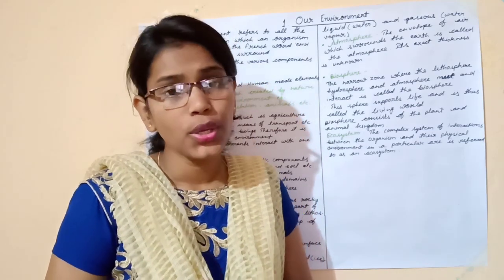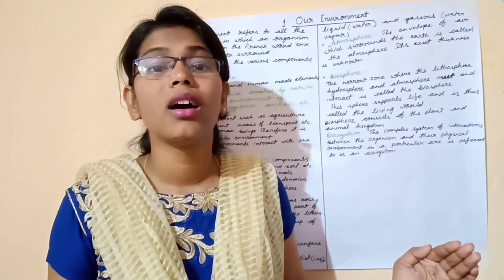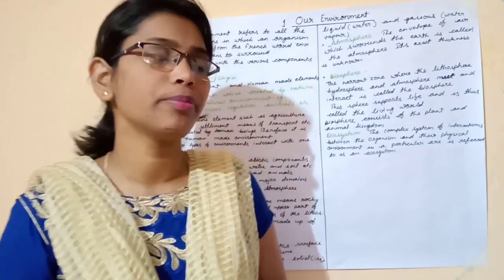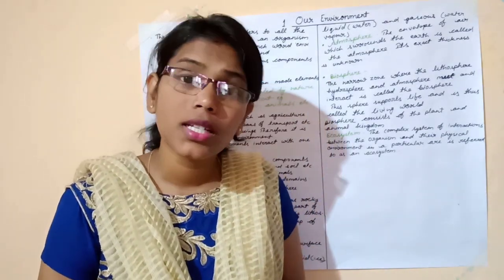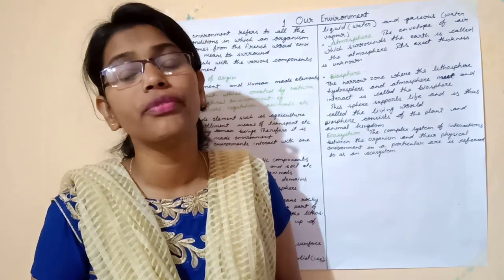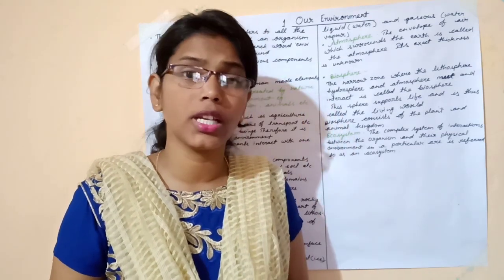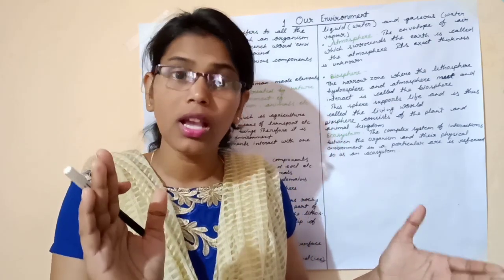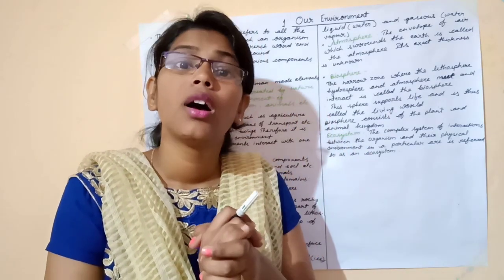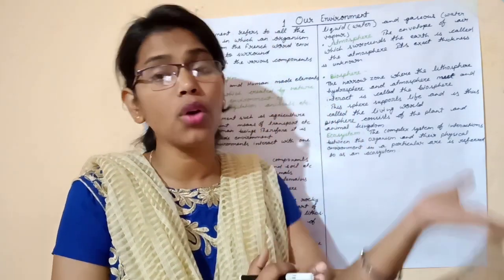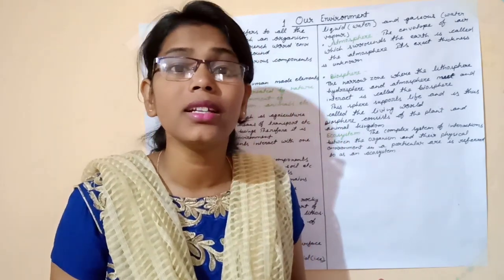That means in our environment two types of things are found: first is natural environment, and the second is human-made environment. In geography we study the many components of natural and human environment, and we study the interrelation between them — how human environment depends on natural environment and how natural environment helps human environment.